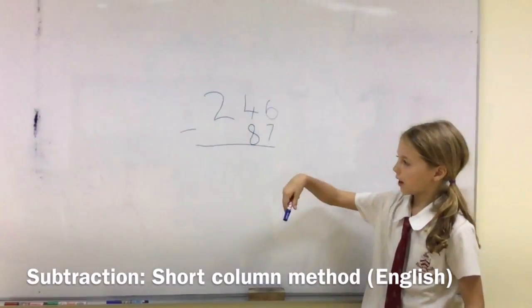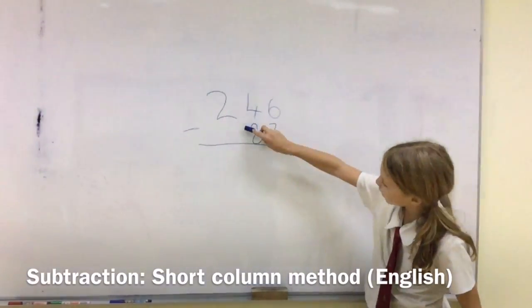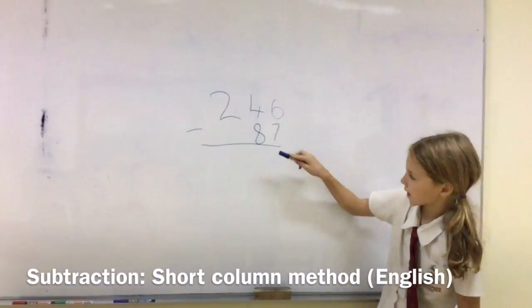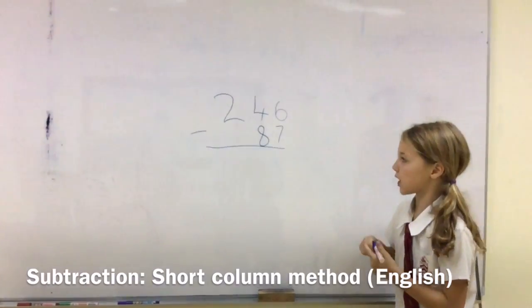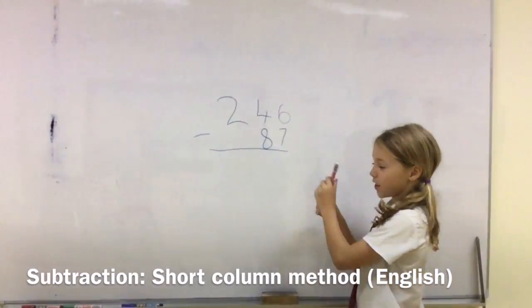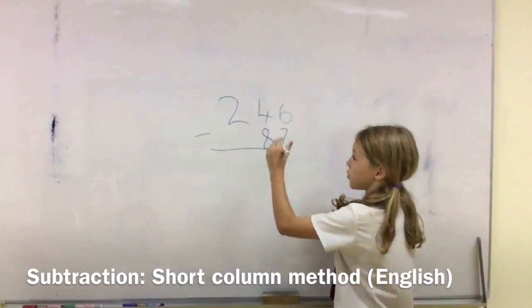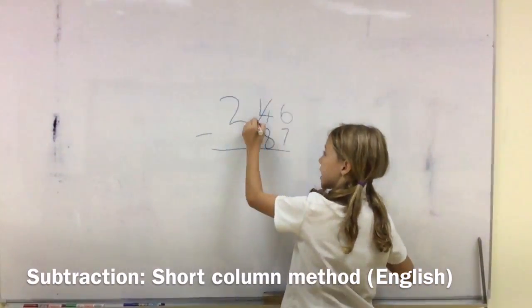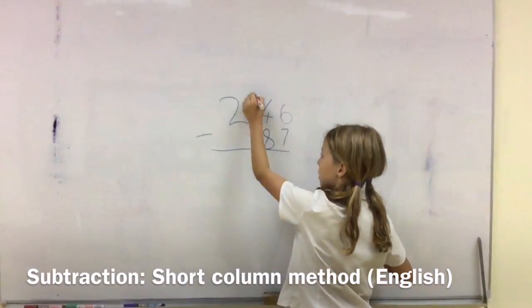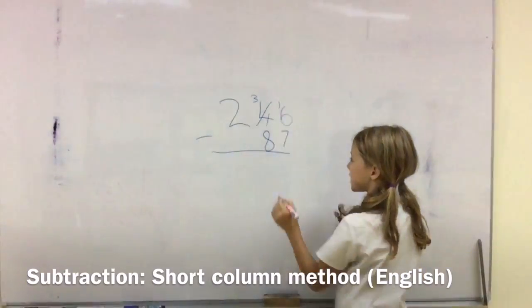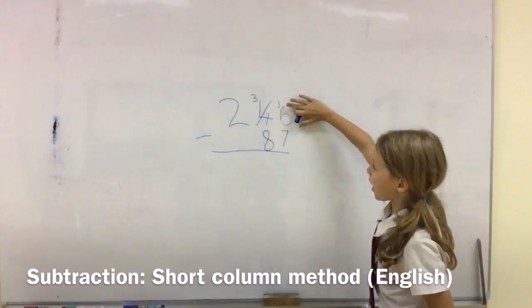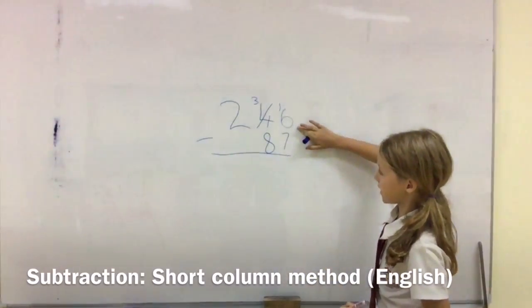We're going to be doing 246 subtract 87. So 6 subtract 7, you can't do that. So you take from the 4, which equals 3, and 6, and you add, give it to the 6.